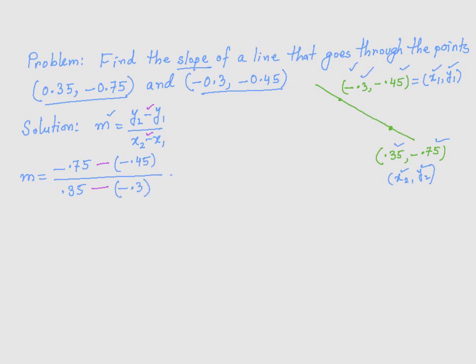Now I am going to simplify it. I get negative 0.75. This negative and negative is going to make it positive because we are multiplying it. So plus 0.45, divided by 0.35. This negative and this negative, they are going to make it positive because we are multiplying them, so plus 0.3.